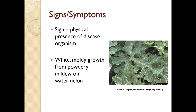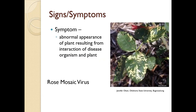In diagnosis, we have a sign — a sign is a physical presence of a disease organism. In this case, it's the white moldy growth from powdery mildew on watermelon. A symptom is the abnormal appearance on the plant resulting from this disease. Here we have rose mosaic virus.